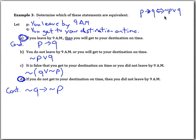So looking at statement B — negation P or Q — we can change any 'or' statement to an arrow by negating the first part and leaving the second part. Since negation of negation P is P, we get P arrow Q. So B is also equivalent to the conditional.